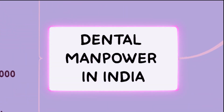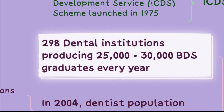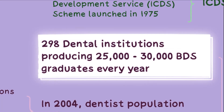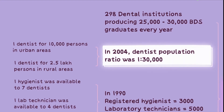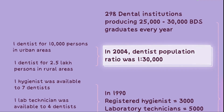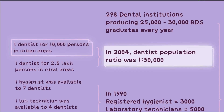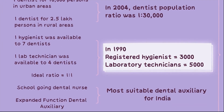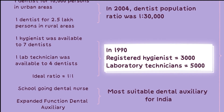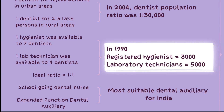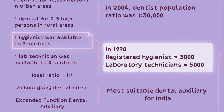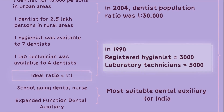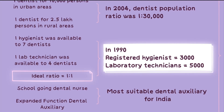Regarding dental manpower in India, there are approximately 298 dental institutions producing 25,000 to 30,000 BDS graduates every year. In 2004, the dentist-to-population ratio was 1 to 30,000, meaning one dentist for every 30,000 individuals; however, the distribution of dentists is uneven. In 1990, there were 3,000 registered dental hygienists and 5,000 laboratory technicians in India, with a ratio of 1 hygienist per 7 dentists and 1 lab technician per 4 dentists. The ideal ratio is considered to be 1 auxiliary for every dentist.